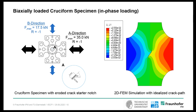We also like to show you one result of our cruciform specimen testing. Our geometry has two loading axes called A and B direction. In the center of the cruciform specimen is a crack starter notch manufactured by eroding. The initial start crack has an incline of 45 degrees. We loaded the specimen in A direction with 35 kN to an R ratio of minus 1, and in the B direction with 17.5 kN also with an R ratio of minus 1. The test was carried out with a frequency of 5 Hz. The crack direction turned out to be perpendicular to the highest load.